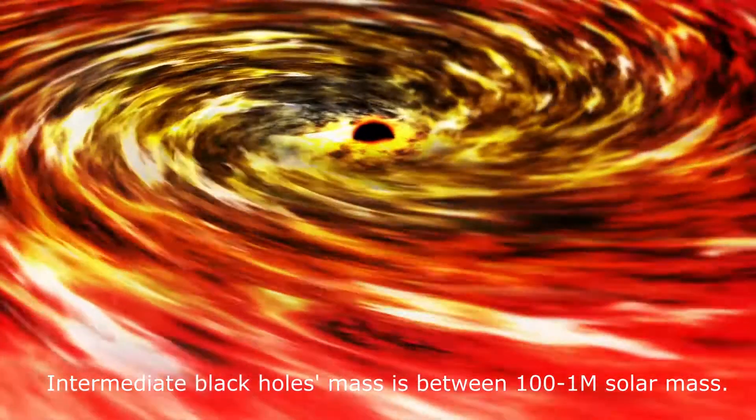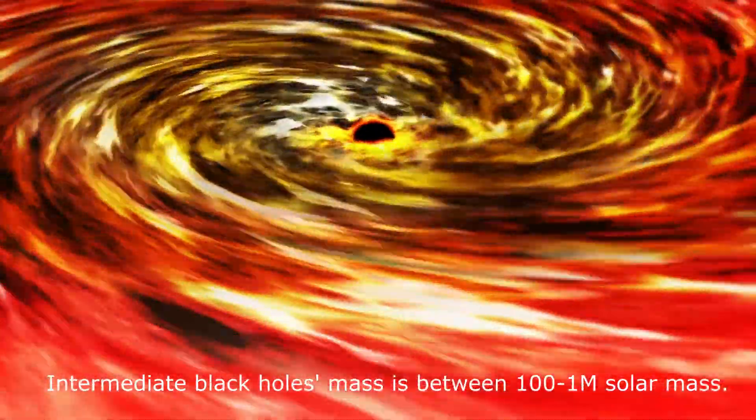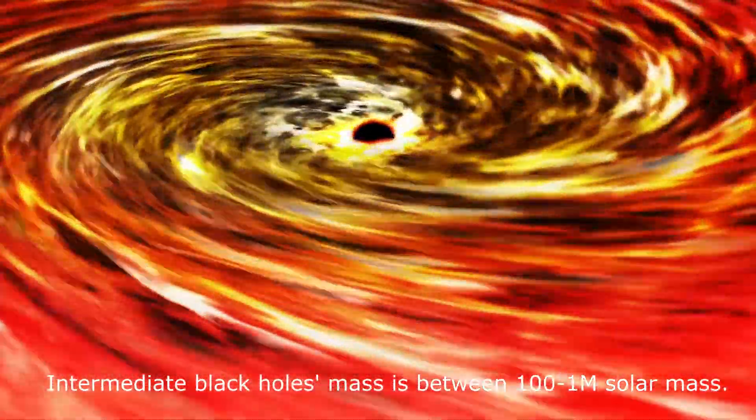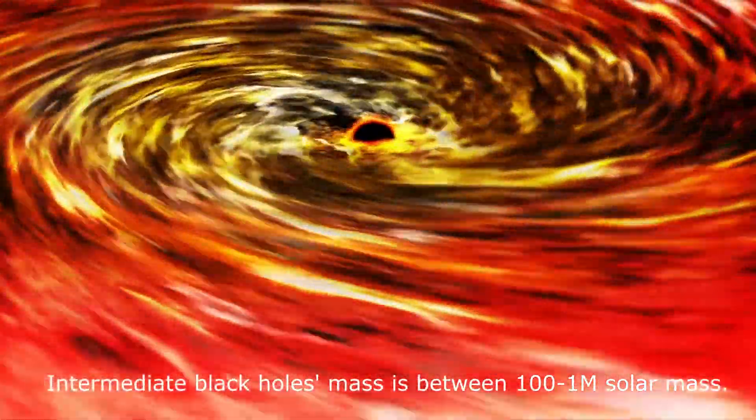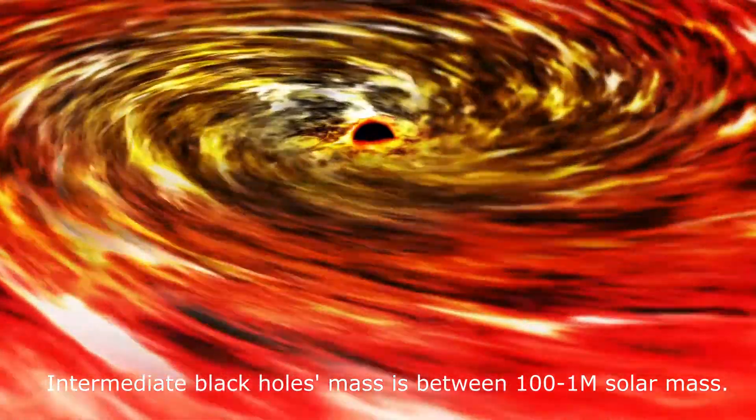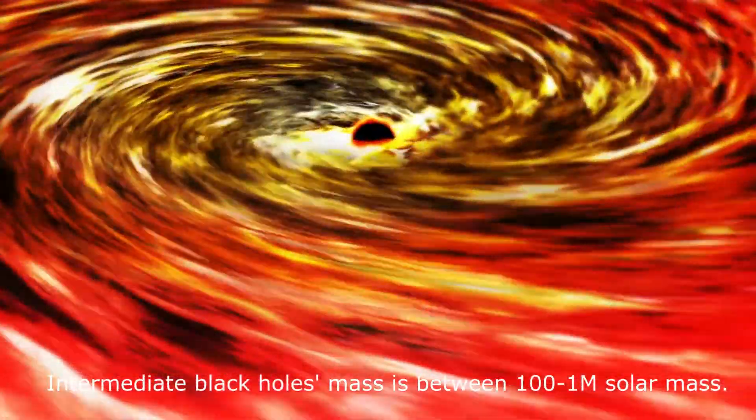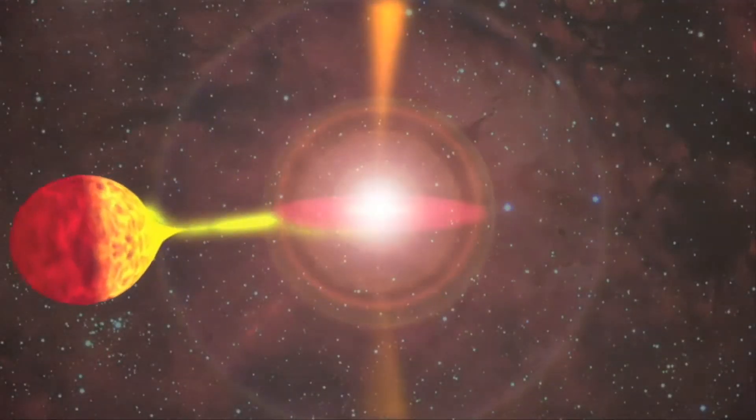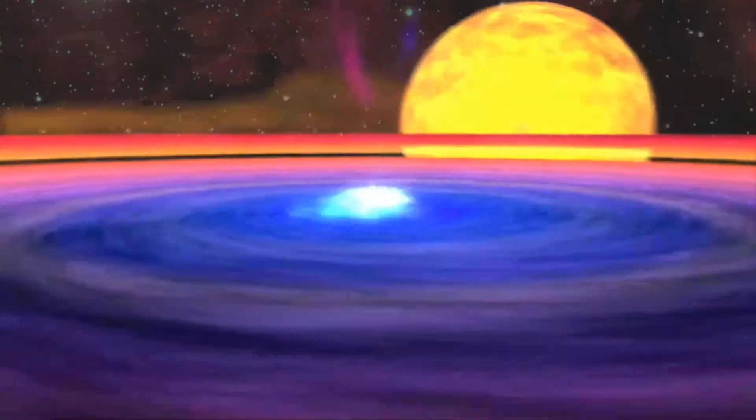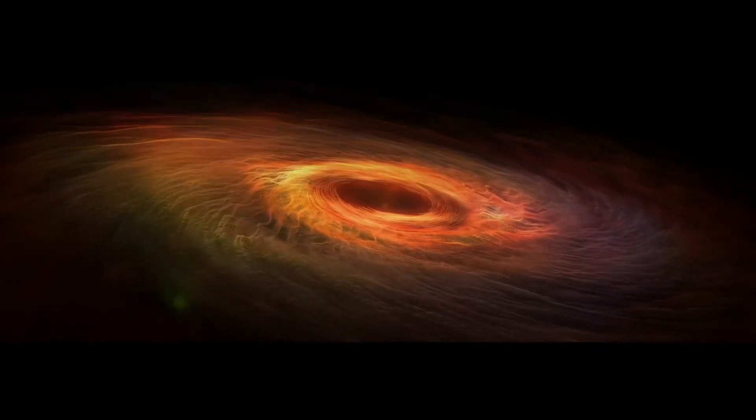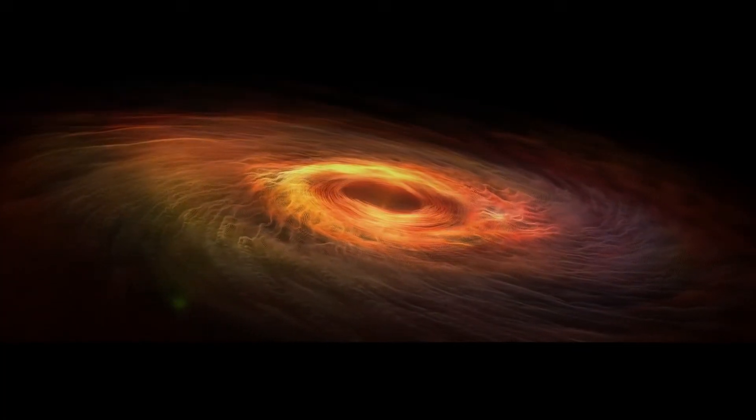An intermediate mass black hole is a black hole with mass in the range 100 to 1 million solar masses, significantly more than stellar black holes but less than supermassive black holes. Several candidate objects have been discovered in our galaxy and others nearby, based on indirect gas cloud velocity and accretion disk spectra observations.